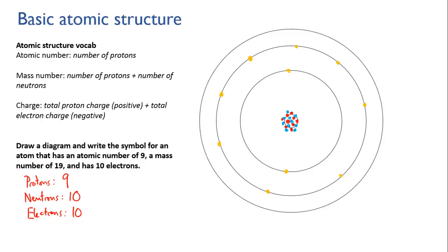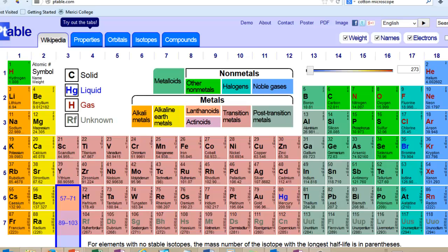Our final task is to write the symbol for this atom. The first thing we need to do is work out what element it actually is. To do that we need a periodic table, and with the knowledge that its atomic number is 9, we find that it's fluorine.